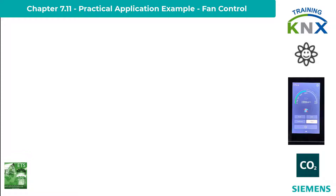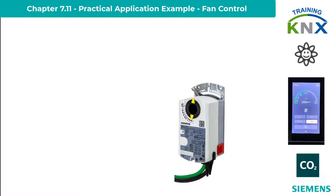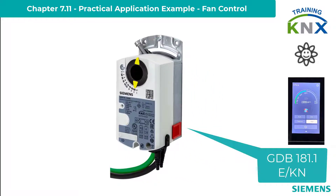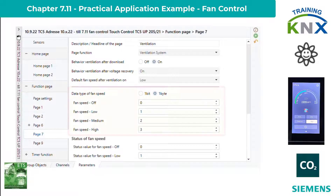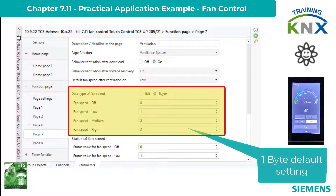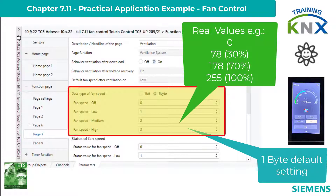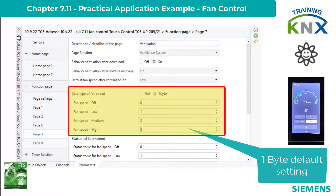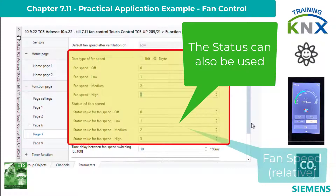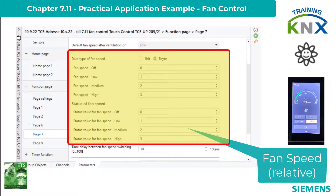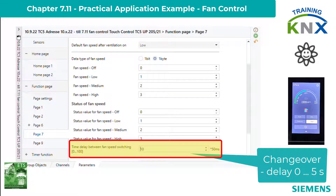An example for this control is the Siemens VAV air volume controller GDB 181E/KN for air dampers, which allows basically continuous positioning but usually has to control only three positions. In the default setting of the TC5, the values from 0 to 3 appear here, which have to be adapted to the actual air damper positioning in real use. For this task, I leave the values as they are, since we will only look at the telegrams in the test, where the active fan stage is easiest to interpret. The time delay for switching speed levels can be set from 0 to 5 seconds; I leave the 500 millisecond default setting unchanged.